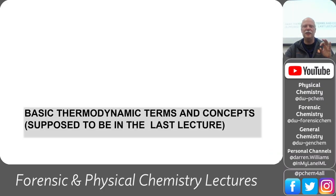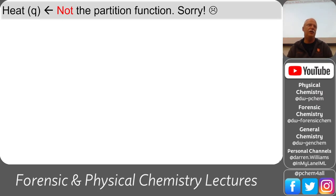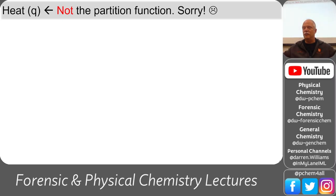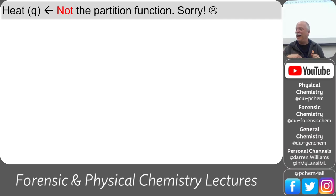These are some basic thermodynamics terms from the end of last lecture. We're dealing with heat most of this course, especially the next three weeks in the lab. Heat in this part of the course is Q. In statistical thermodynamics Q is the partition function, but in a thermal course Q is heat. On the first exam Q is the partition function; on the second, third, fourth exams, it's heat. We have that notation in the literature and I don't want to change it.